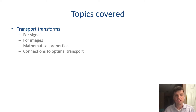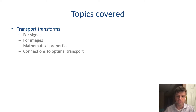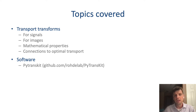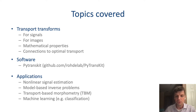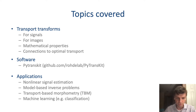A brief outline of the topics we'll cover in this series includes the definition of transport transforms for signals and images, their mathematical properties, and their connections to optimal transport. Along the way we'll talk about our PyTransKit software package, which implements these transforms for digital signals and images with many examples, as well as applications in non-linear signal estimation, model-based inverse problems, transport-based morphometry, and image classification.